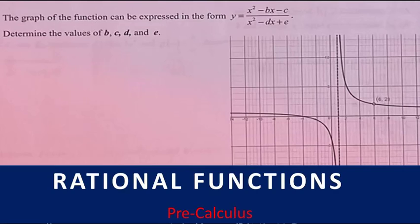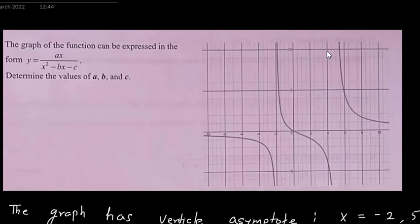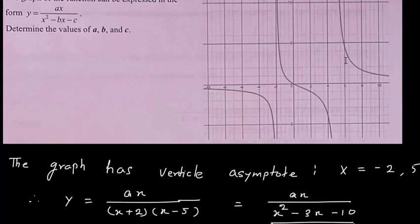Hello everyone. Let us discuss the question: the graph of a function can be expressed in the form y = ax divided by x² minus bx minus c. Here we have to determine the value of a, b, and c. You can see the graph on the right-hand side. Now how do we solve this problem?